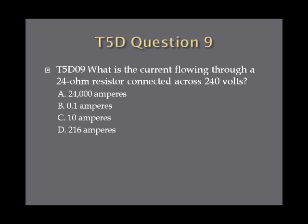Question 9: What is the current flowing through a 24 ohm resistor connected across 240 volts? A. 24,000 amperes. B. 0.1 amperes. C. 10 amperes. Or D. 216 amperes.